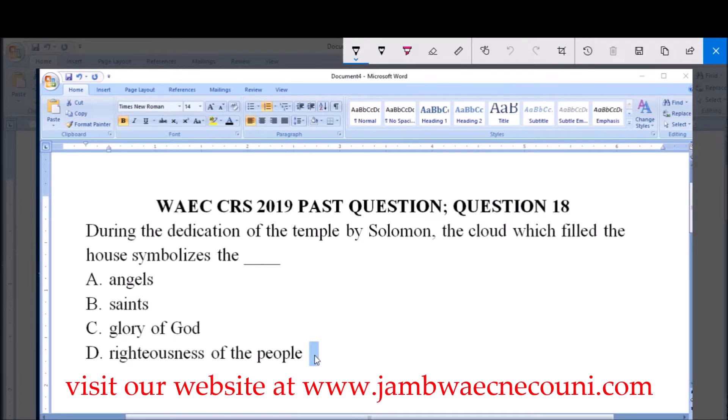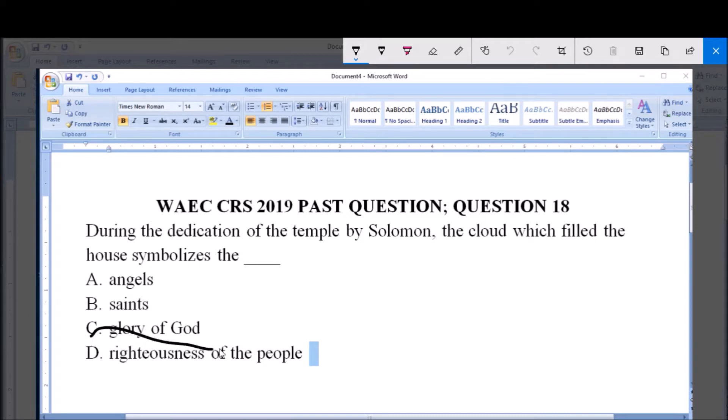The correct option is option C. It symbolizes the glory of God. During when Moses and the elders of the Israelites dedicated the temple to God, there was a cloud or